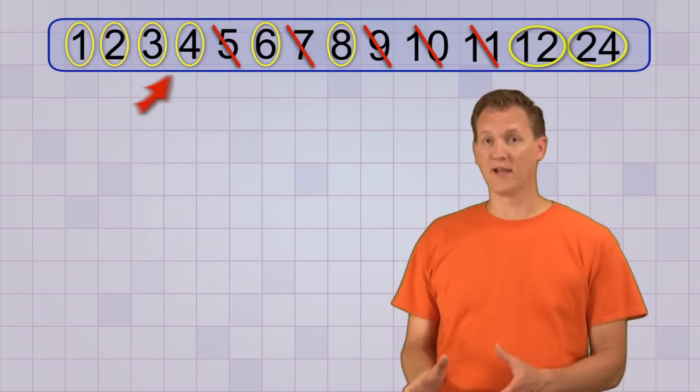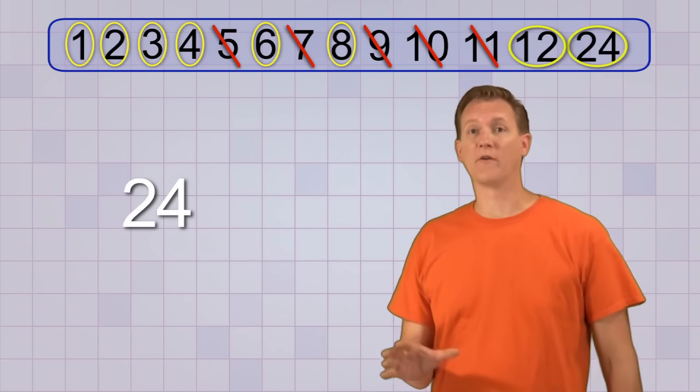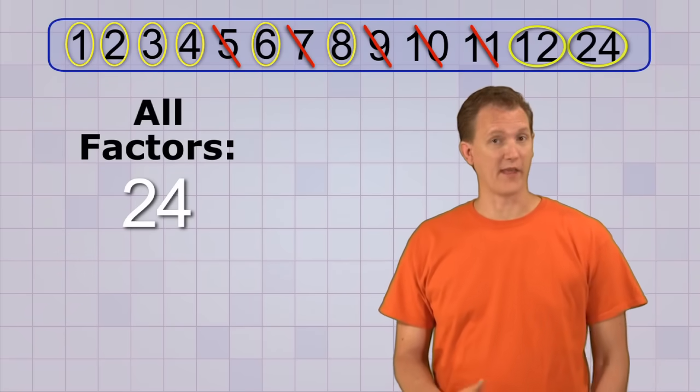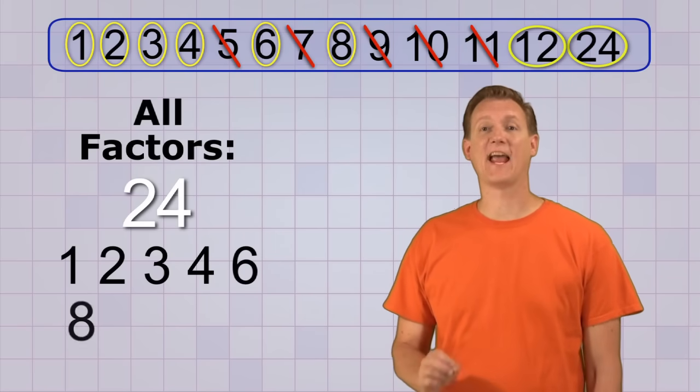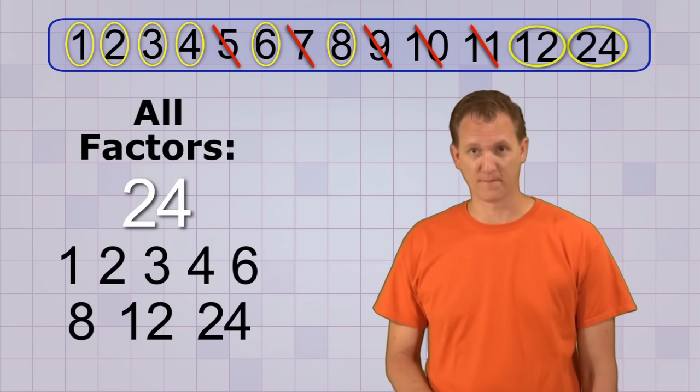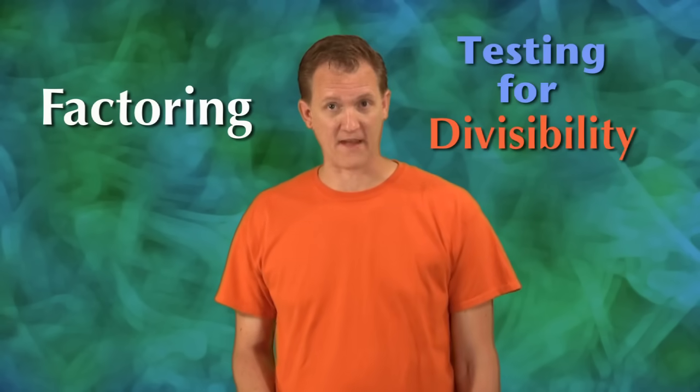Alright, since we've tested all the numbers that are less than half of 24, we've found all of its possible factors, and they are 1, 2, 3, 4, 6, 8, 12, and 24. Now I know that might seem like a lot of work, but fortunately you probably won't have to do many of those problems. The important thing is just to know what factoring is, and how you can use testing for divisibility to help you find factors.